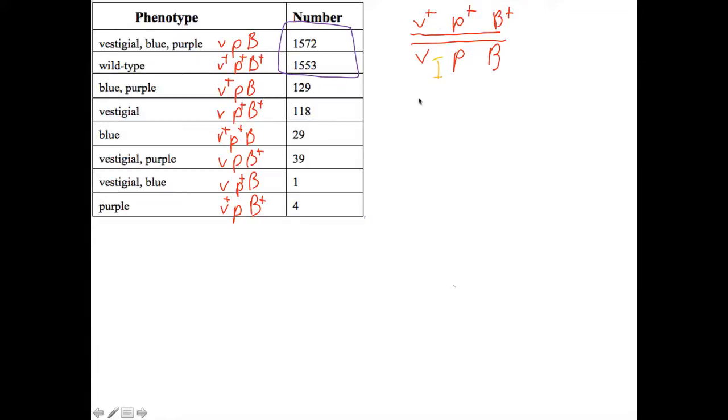If we then look at region one, which is between V and P, we can assign the crossovers that occur there. If we look here, we have the genes in coupling. If they're in repulsion there and there, and also here and here, we're going to put a little one beside it to tell us it's a crossover in region one.